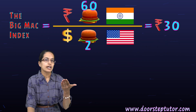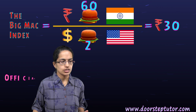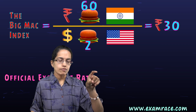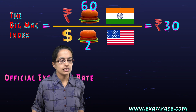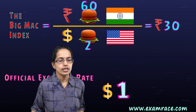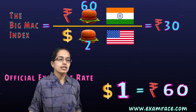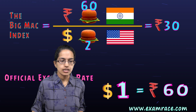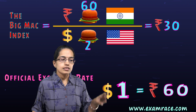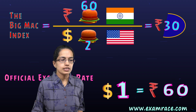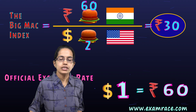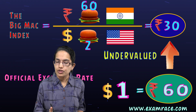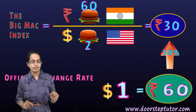Now what we do is compare this with the official exchange rate. Let's say at this point the official exchange rate against one dollar is rupees 60. Since the burger is being sold for rupees 30, but the official exchange rate is rupees 60, we can say the currency is undervalued by 50% — and that's how we understand the Big Mac Index.